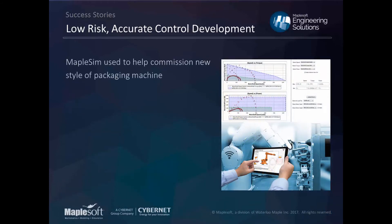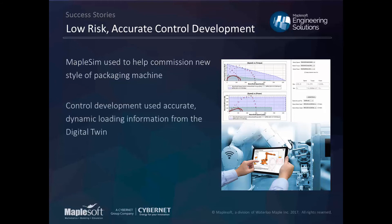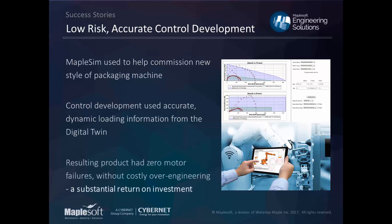A quick example from the machine design world: a customer was getting motor failures after shipping their products. Deeper analysis showed they were missing spikes in current draw on the motors — their commissioning phase test cycles all passed, but the product failed earlier than predicted. The issue was that they were using Excel for static steady-state analysis, so they weren't capturing detailed enough accelerations and actual torques the motors experienced. By using our software to test upfront, they were able to adjust the motion profile rather than add a bigger motor, and were much more confident the failures wouldn't recur.